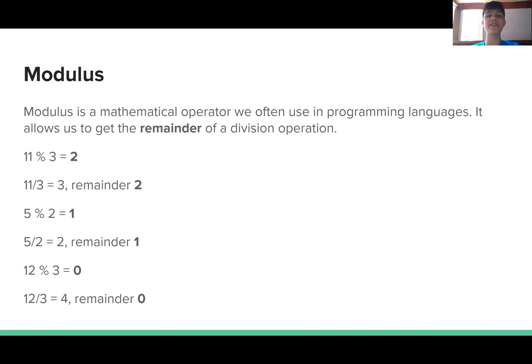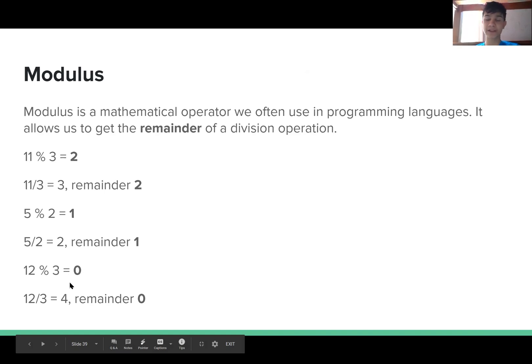Modulus. Modulus is a mathematical operator that we often use in programming languages. It allows us to get the remainder of a division operation. Let's look at the examples. 11 modulus 3 equals 2 because 11 divided by 3 equals 3 with the remainder of 2. 5 modulus 2 equals 1 because 5 divided by 2 equals 2 with the remainder of 1. And what if you divide something and there is no remainder? 12 divided by 3 equals 4 and there's no remainder. 12 modulus 3 will equal 0 because there is no remainder.